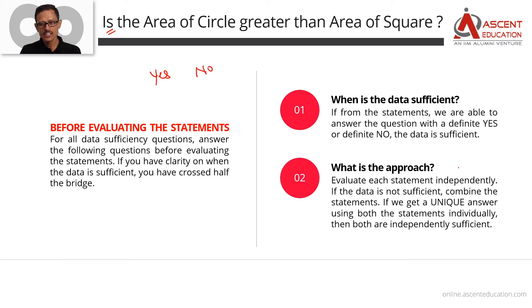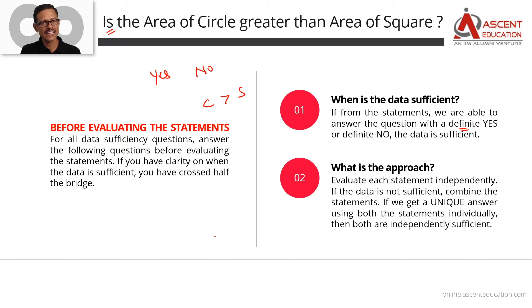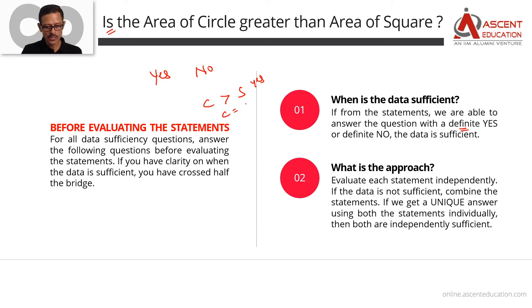How is data sufficient? If you are able to give a definite answer — either a definite yes or a definite no — then the data is sufficient. If the circle area is greater, you say yes. If the circle area is less or equal, you say no. Either way, the data is sufficient as long as the answer is definite.